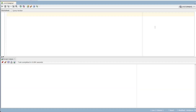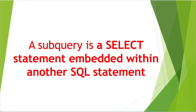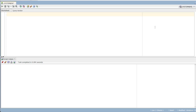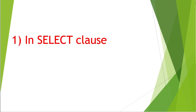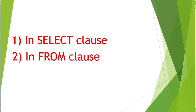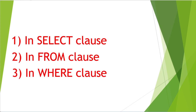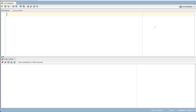What are subqueries? We have subqueries in a SELECT query. We have subqueries in three levels: we have subqueries in a column, we have subqueries in a SELECT statement, we have subqueries in a table, and we have subqueries at a record or row level.